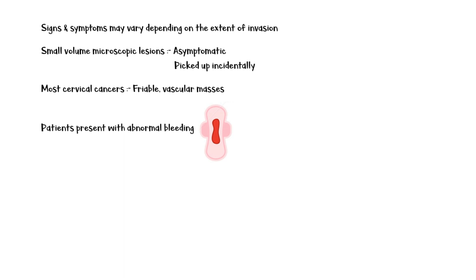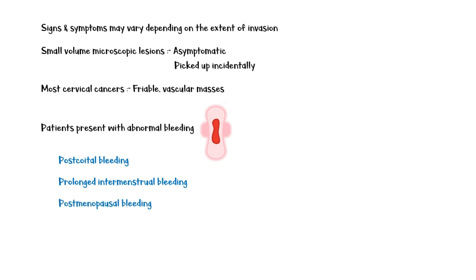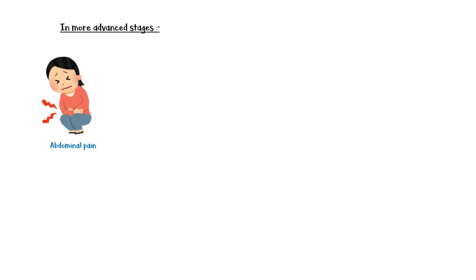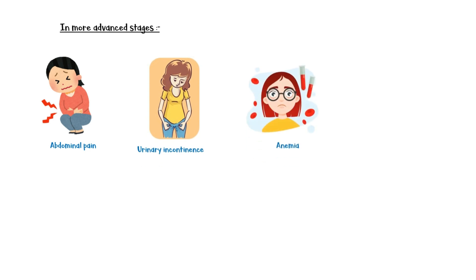Signs and symptoms of cervical cancer may vary depending on the extent of invasion. Small-volume microscopic lesions are often asymptomatic and detected incidentally. Most cervical cancers are friable vascular masses on the cervix, and patients usually present with abnormal bleeding — typically post-coital bleeding, prolonged intermenstrual bleeding, and post-menopausal bleeding. Any woman with these symptoms should undergo a pelvic examination. In more advanced cases, patients may also have abdominal pain, urinary incontinence, anemia, and renal failure.